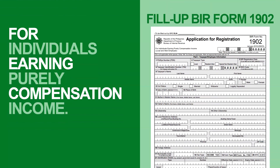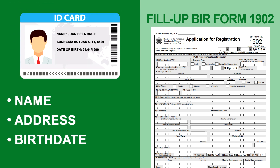Second, for individuals earning purely compensation income: fill up BIR Form Number 1902 and present the following attachments — any valid identification card issued by a government agency.